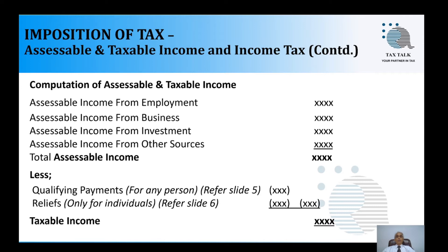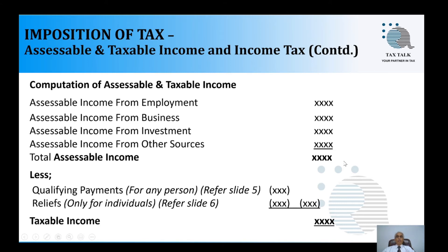Now we will see how to arrive at the taxable income from accessible income using a formula. We take the accessible income from employment, from business, from investment, and from other sources. The total of those is the total accessible income. From that, we deduct qualifying payments and reliefs — qualifying payments are available for any taxable person, while reliefs are available only for individuals — to arrive at the taxable income.